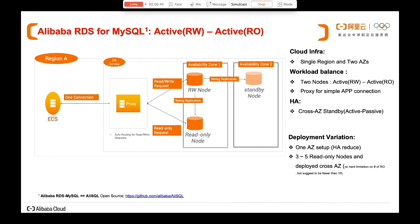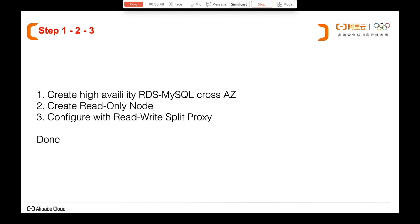So how do we actually create this on Alibaba Cloud? We'll do it in three simple steps: first, create a high-availability MySQL instance cross-AZ; then add the read-only node and configure it; and finally set up the read-write splitting proxy.